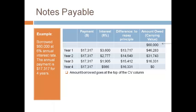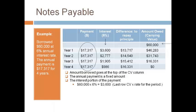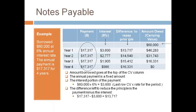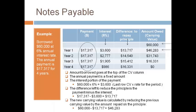The amount borrowed starts at the top of the carrying value amount owed column. The annual payment is a fixed amount for each year. The interest portion of the payment is computed as the amount owed before the payment is made times the interest rate of 6%, or $3,600 for the first year. The difference between the payment and interest — $17,317 minus $3,600 — reduces the amount owed at the end of the year.